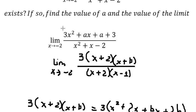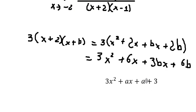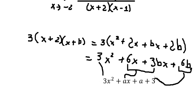Now we need to compare with this one. So now we have number 3 and number 3. x squared is number 3. We have 6 plus 3b equals to a, and this one equals to a plus 3.